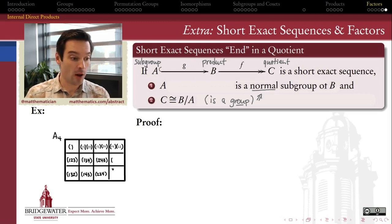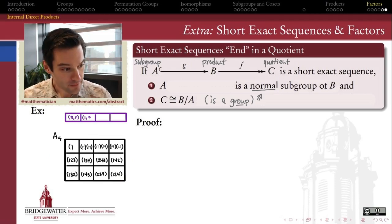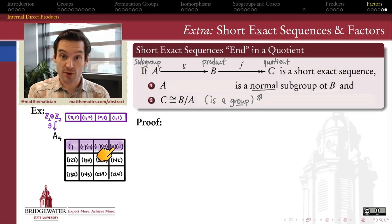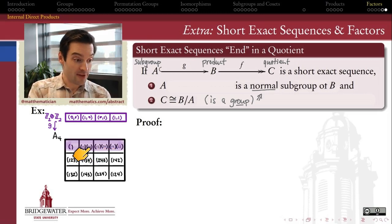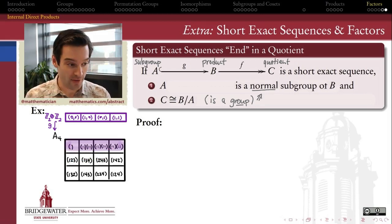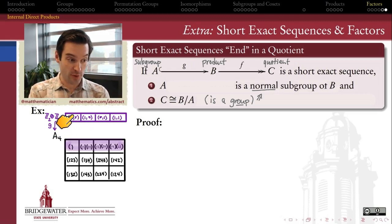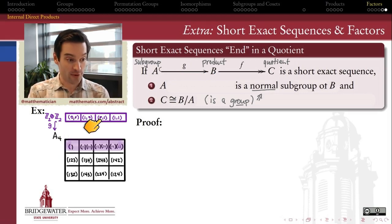Here's the group A4 — all 12 even permutations of four symbols. We can understand the first row of this table of elements: this is the identity permutation and all three of the 2-plus-2 cycle type permutations in S4. This is actually a normal subgroup of S4, and it's isomorphic to the Klein 4-group, Z2 plus Z2. So we can think of A4 as being the product group and A, the subgroup, as being isomorphic to this Klein 4-group, Z2 plus Z2. G is then the one-to-one homomorphism that sends these elements to those elements on the first row of my A4 table.